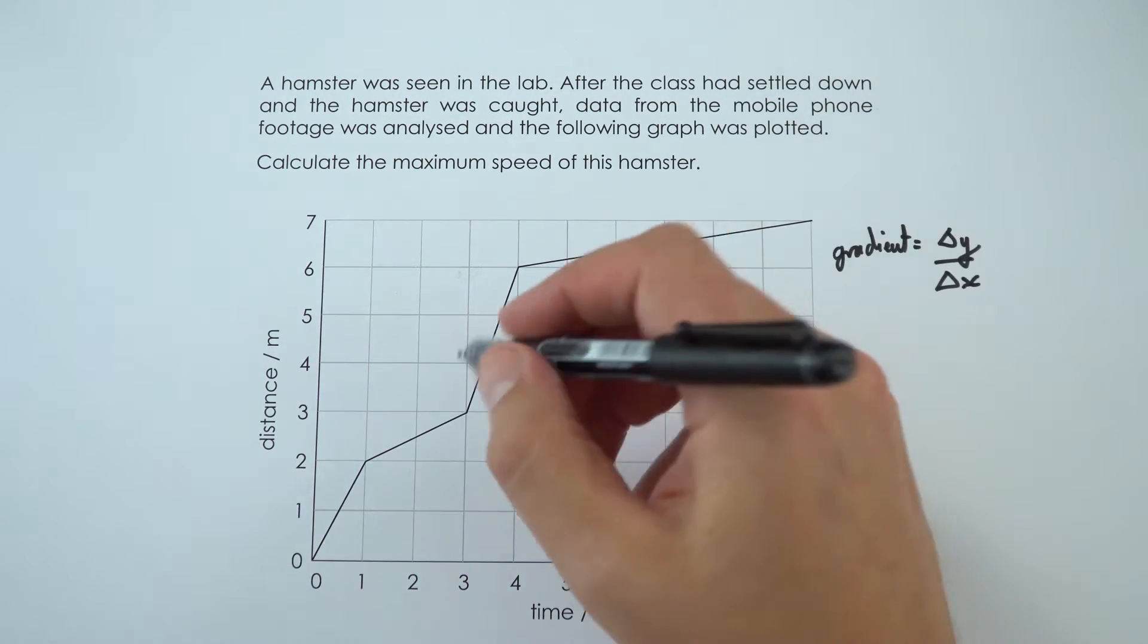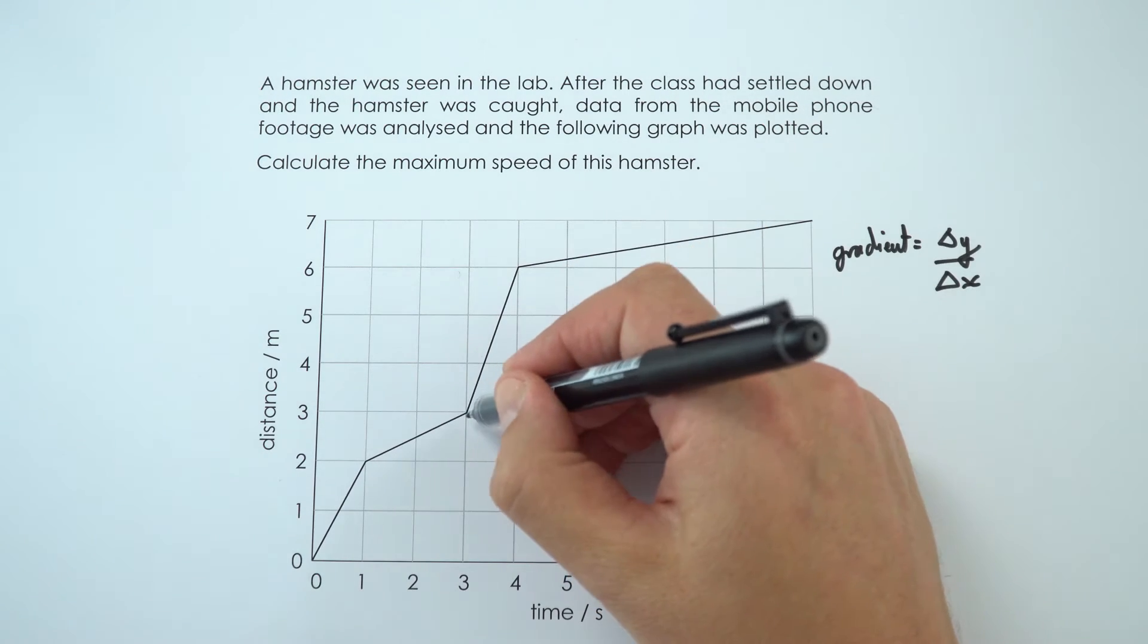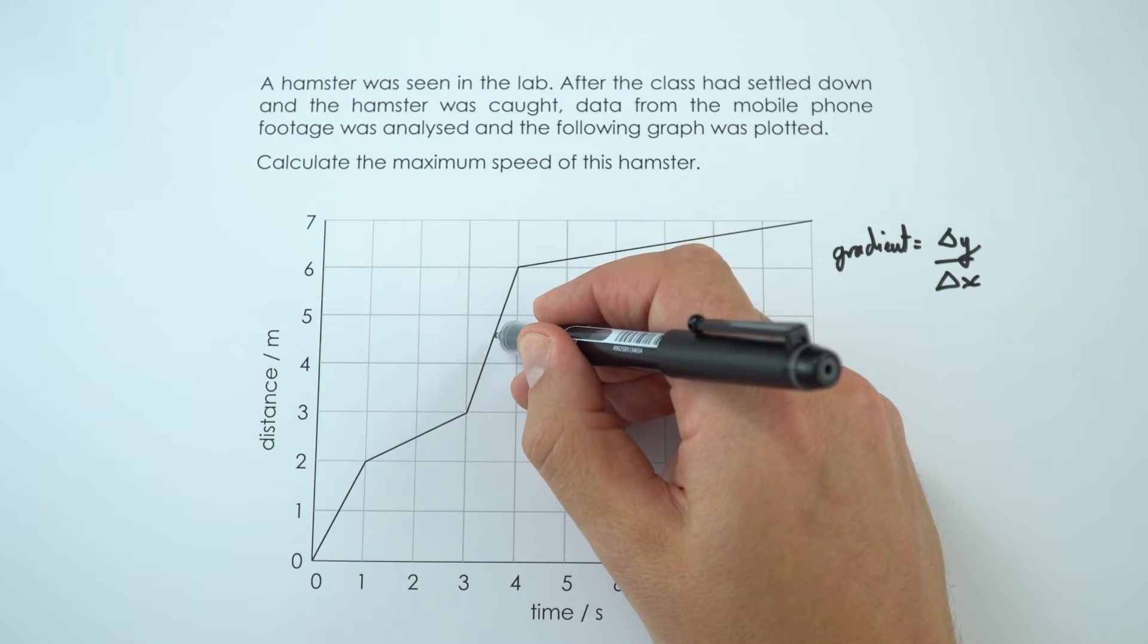And to work this out, all I'm going to do is, on the graph, draw in a triangle around this steepest gradient over here.